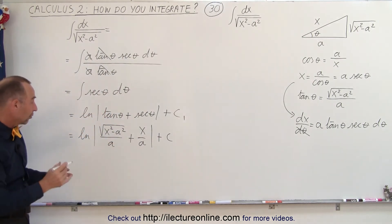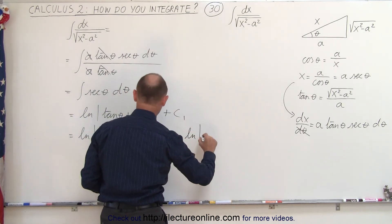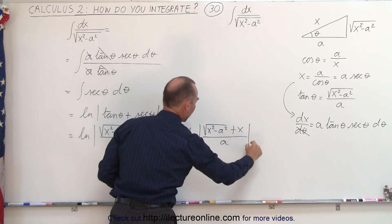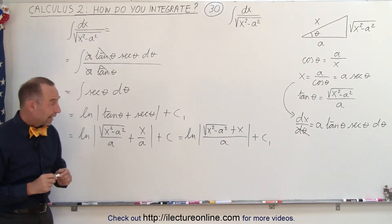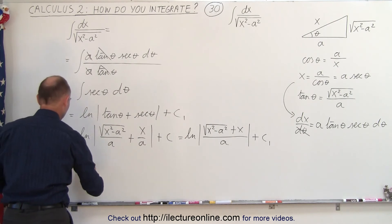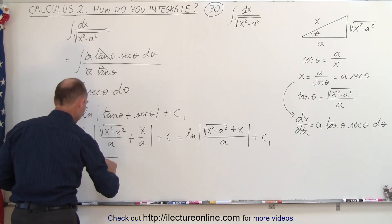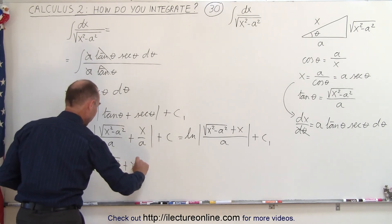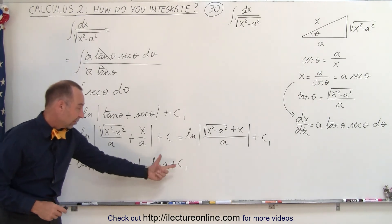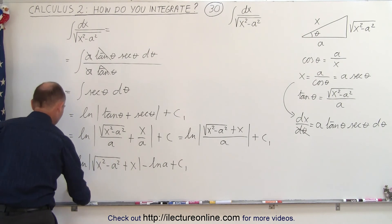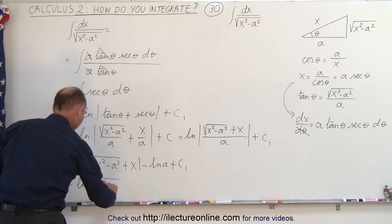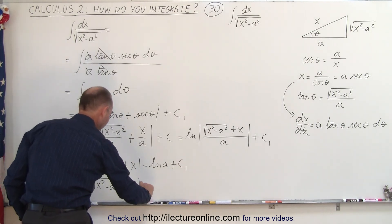Notice that we can write both of these over a single denominator. So this can be written as the natural log of the square root of x squared minus a squared plus x in the numerator, divided by a in the denominator. Since we have the natural log of a fraction, that can be written as the natural log of the numerator minus the natural log of the denominator — the natural log of the square root of x squared minus a squared plus x, minus the natural log of a, plus a constant of integration. Since the natural log of a is just a constant, we can combine those and write it as a single constant.